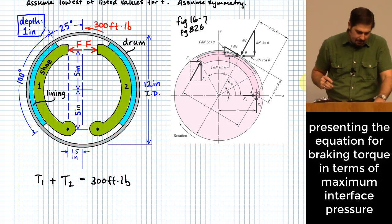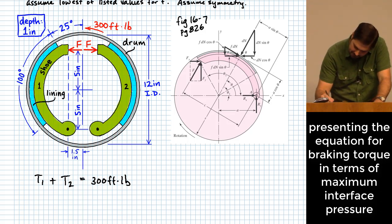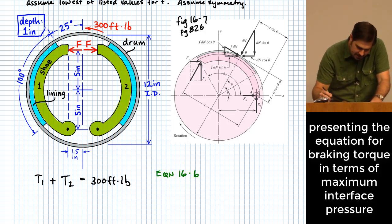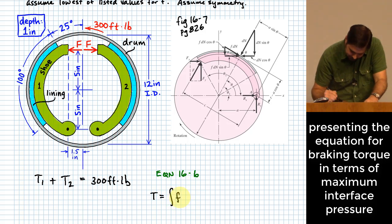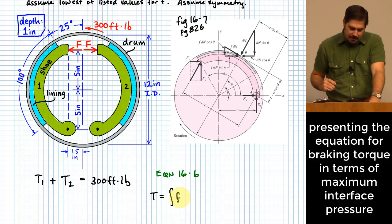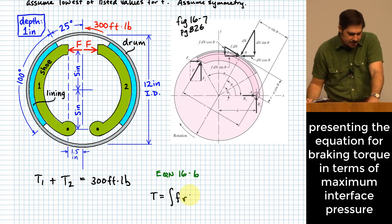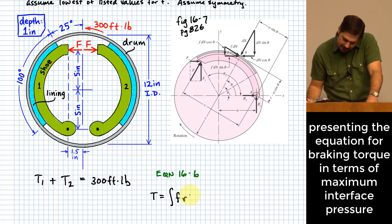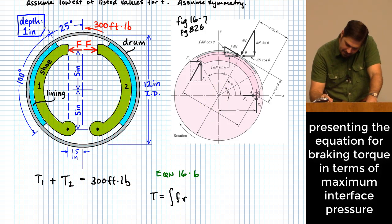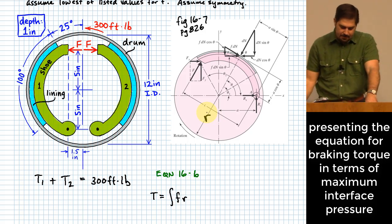Where we see T showing up in the book is with equation 16.6. Equation 16.6 says that T is equal to the integral of: lowercase f — the friction coefficient for the material pair between the drum and the shoe — times R, which is just the radius of the drum. I'll try to make some of these variables a little bit larger on this figure to help us know what they mean. Then we have dN.